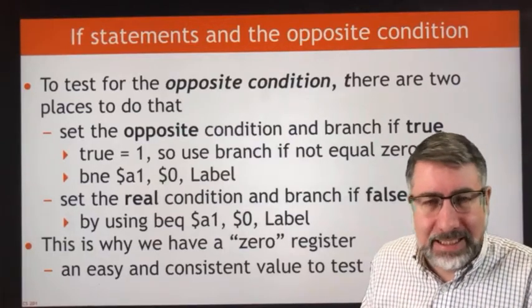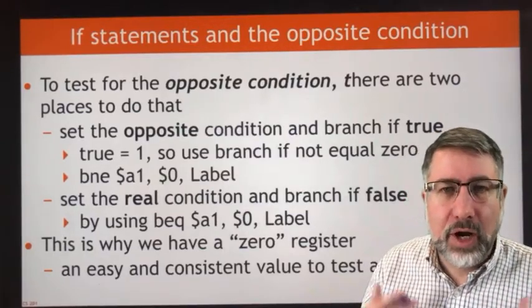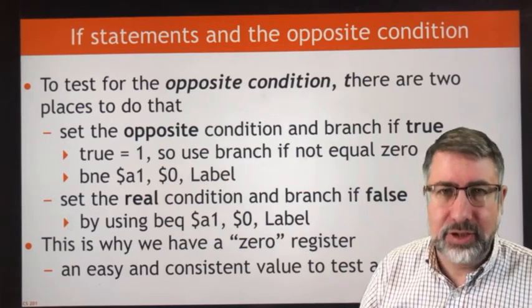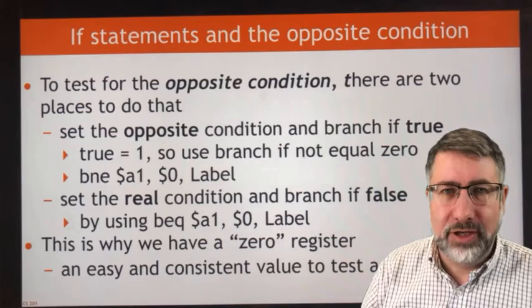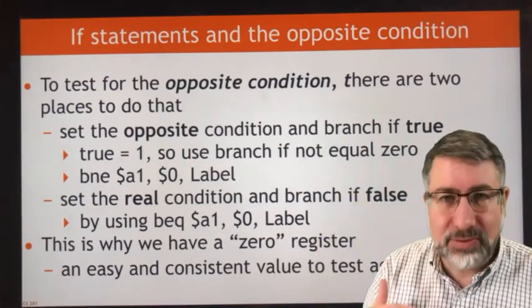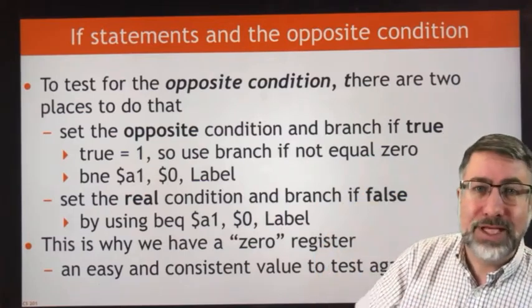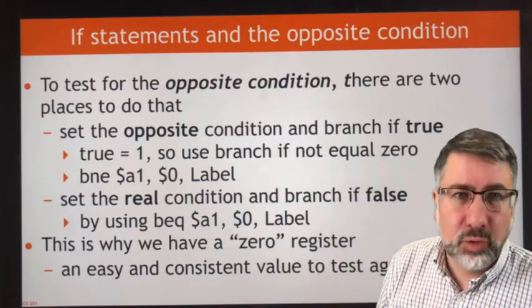Here's a few extra details on branching. I want to remind you that you are testing the opposite condition when you do a branch in assembly language, because you're testing to decide whether to skip something rather than testing to decide whether you want to do something. This is a place where a lot of people get confused, so it's worth reiterating.